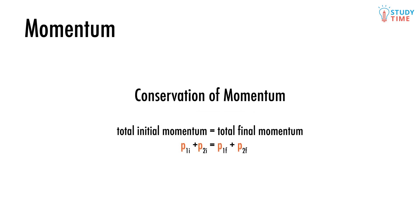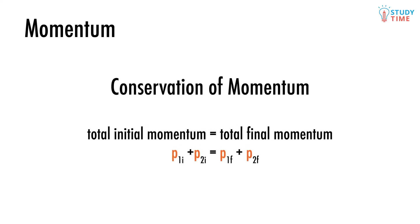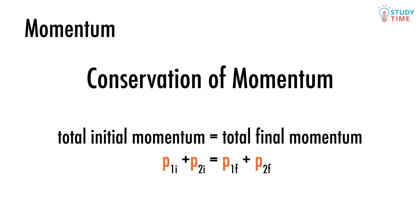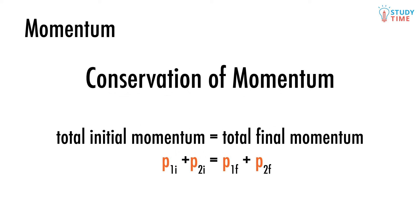Whenever this happens it's called a collision. Collisions are an important part of your mechanics studies. They can seem horrible and complex, but there happens to be an amazing little rule that you can use to simplify even the worst looking questions. It's called the conservation of momentum, and it's the best friend you'll ever have.